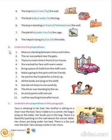Now come to exercise B. In this, we have to underline the preposition in each sentence. In the first sentence, 'between' is the preposition. In the next, 'near' is the preposition. Then 'in front' is the preposition. Then 'with' is the preposition. Then 'with' again, followed by 'from' as the preposition.